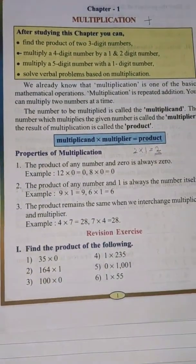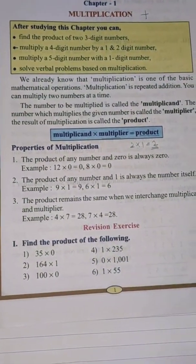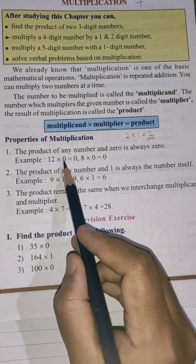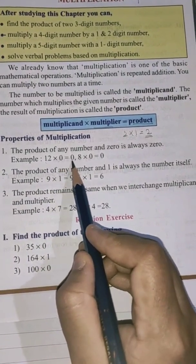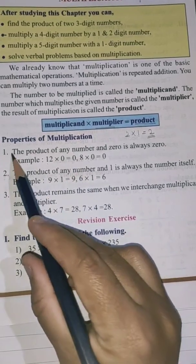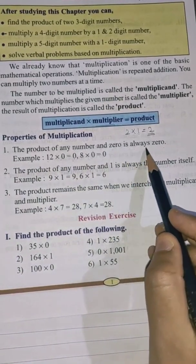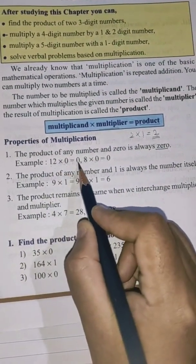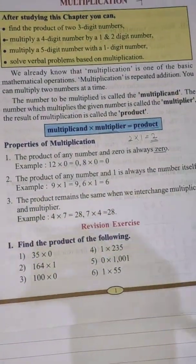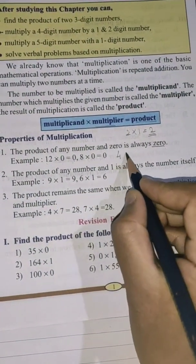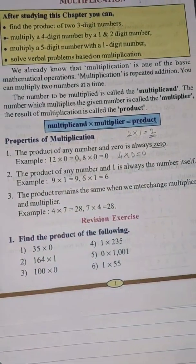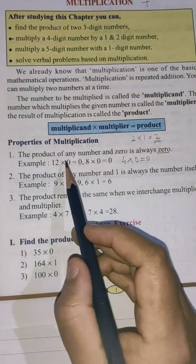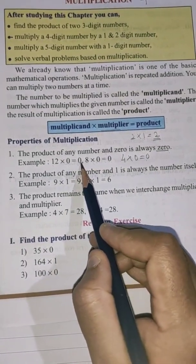Let's see the properties of multiplication. The first property is: if you multiply any number with 0, the answer is always 0 only. The product of any number and 0 is always 0. For example, 12 into 0 is equal to 0, 8 into 0 is equal to 0, and 4 into 0 is equal to 0. So if any number is multiplied with 0, the product will be 0 only.